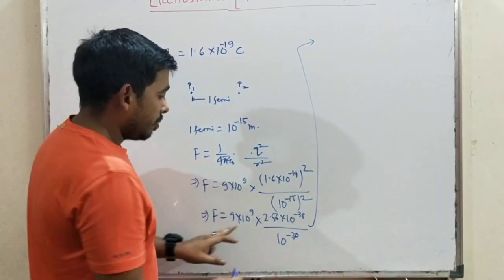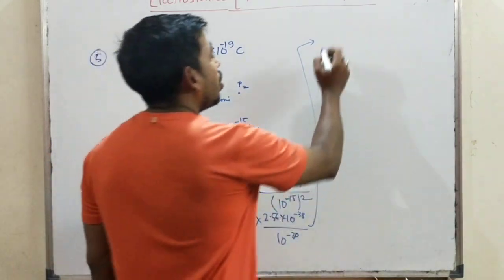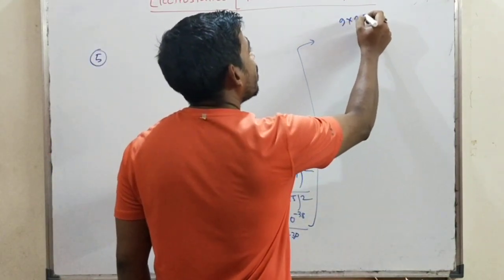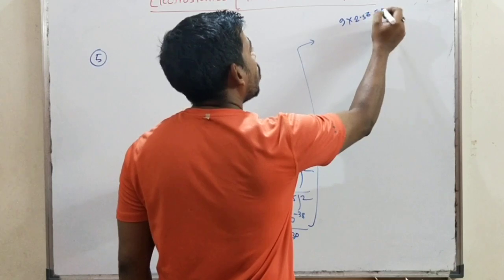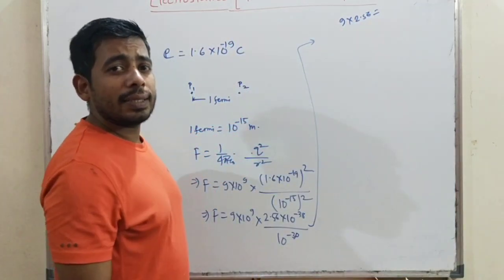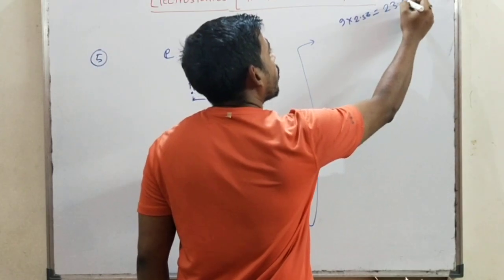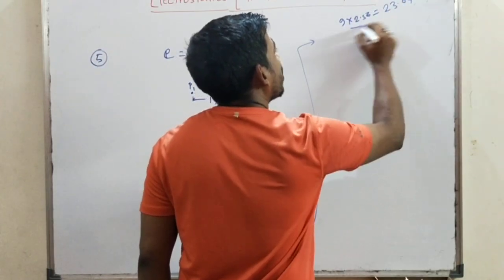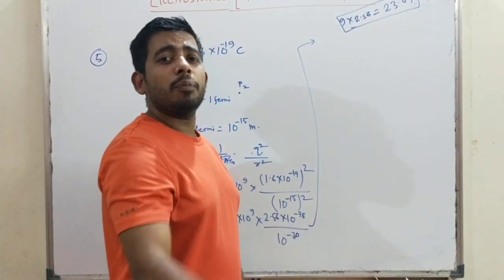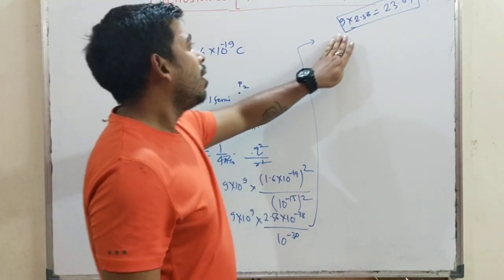Calculating: 9 × 2.56. So 9 × 2.56 = 23.04. This gives us the numerator for the force calculation.